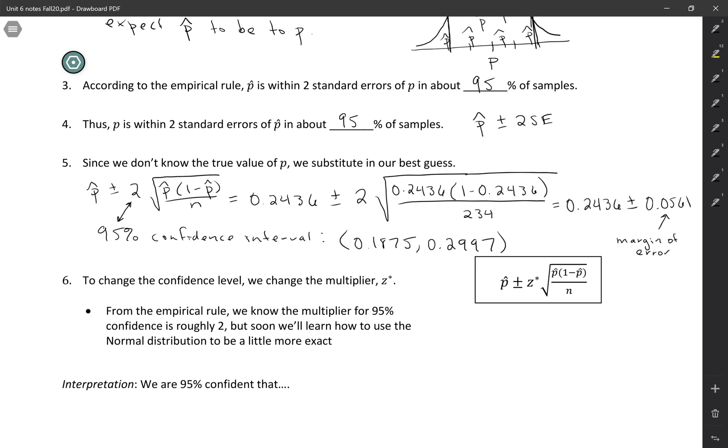But basically our confidence interval has these three parts. So we take our statistic, which in this case is a sample proportion, plus or minus this multiplier. And the term for that is a critical value. So we're using right now 2 for our critical value, but we'll see how to change it.